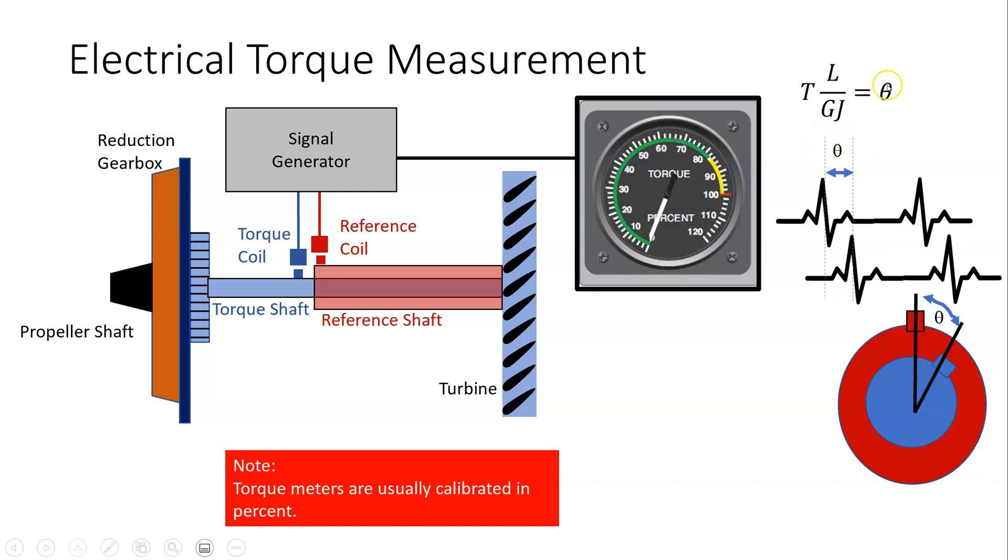And if we have the angle and we multiply or divide it by a constant, we can get the torque. And that torque then can be displayed on this torque meter.